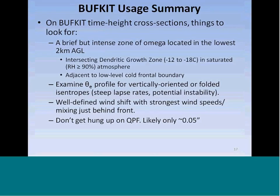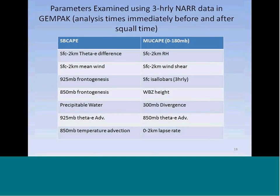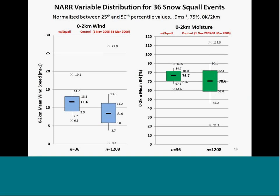What we observed in Buff Kit gave us ideas for atmospheric parameters to examine further using three-hourly North American reanalysis (NCAR) data with the GEMPAK software. We took a partial list of variables and looked for commonalities between cases, aiming to create four-panel images to help forecasters and to support creation of a snow squall parameter. Box-and-whisker plots help us see the differences between the snow squall data set and a control data set drawn from every three-hourly time step during the 2005-2006 winter season.